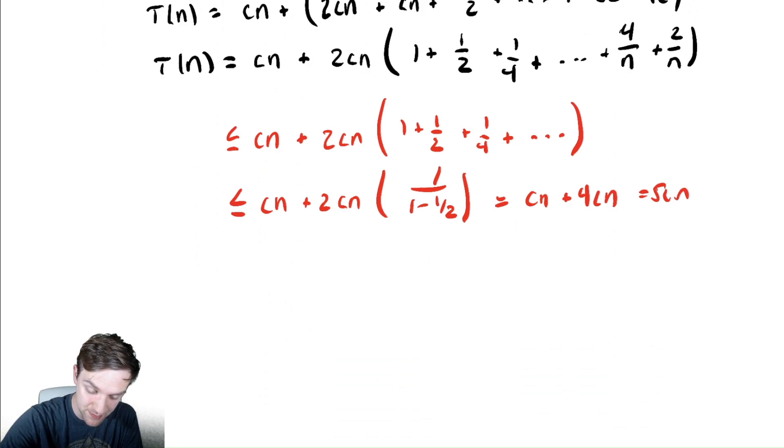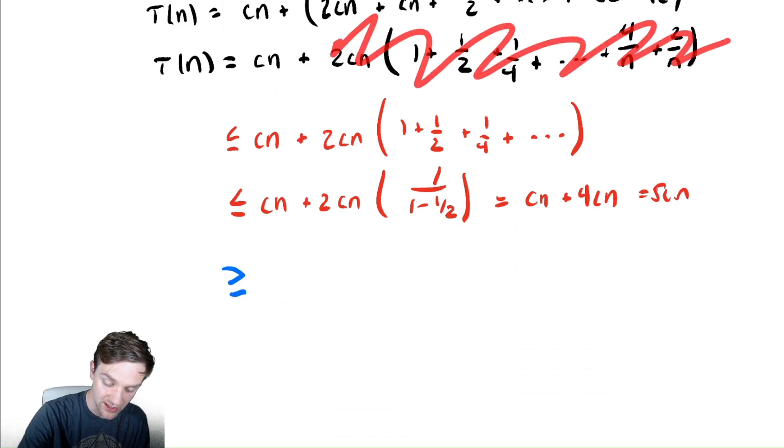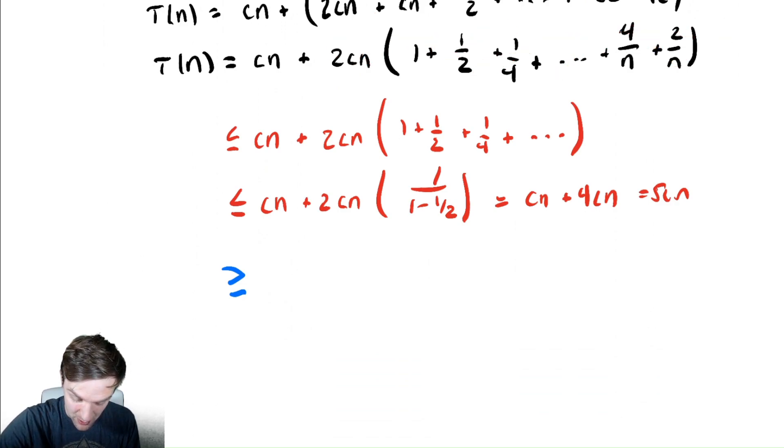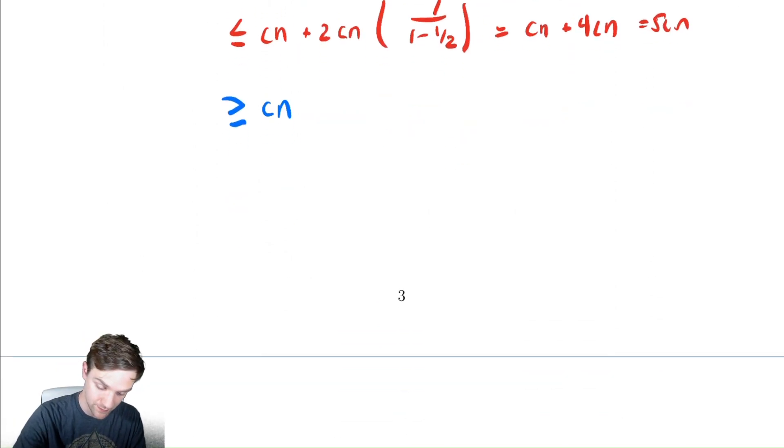We must also bound this below. We're going to bound it below in the standard way. We already bounded above by a linear term, which means we need to bound it below by a linear term. To do that, all we have to do is drop all of these extra terms over here, and that will suffice. So we bound it below by c n. Therefore, T(n) would be in theta of n.